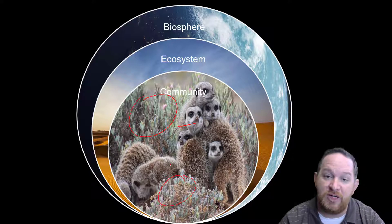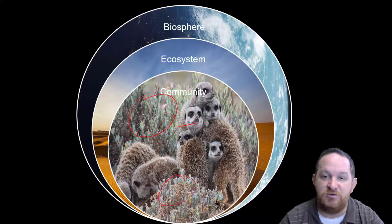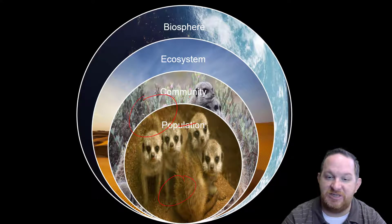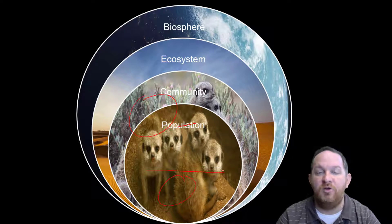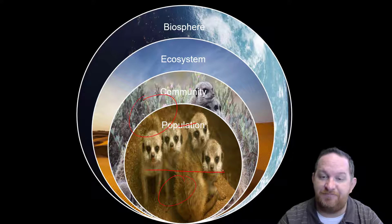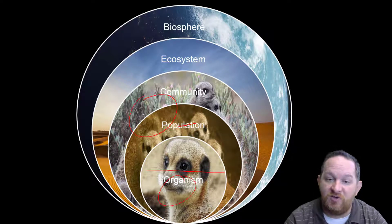A community is all the populations together of living things and some of these abiotic factors that you see as well. So what makes up communities? Populations. In this example, you see a population of meerkats. A population is just one group or species of organisms living in the same space at the same time. And so populations, of course, are made up of organisms. In this video, we want to focus here on populations.